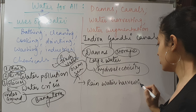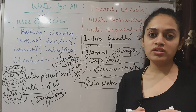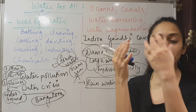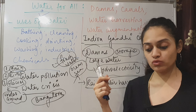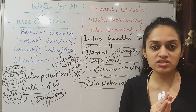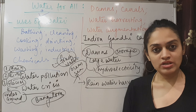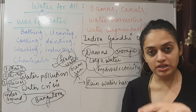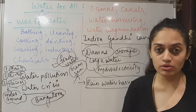Rainwater harvesting means saving the water that falls during rain. You can use different techniques for this. Many people collect rainwater from their homes — the pipes that carry rainwater are directed underground into a storage tank. As much water as is collected in the underground tank can then be used for washing or bathing.